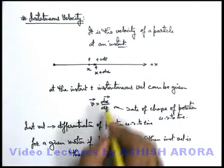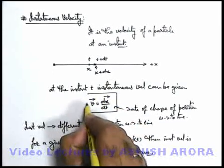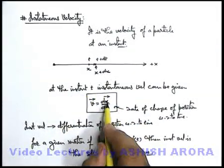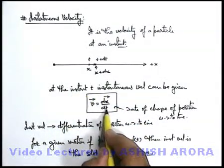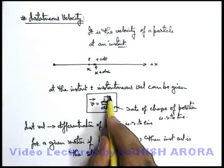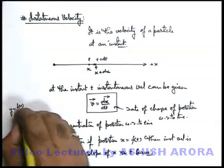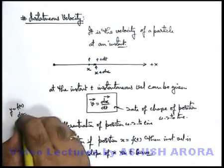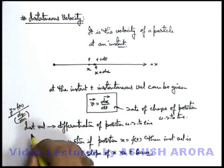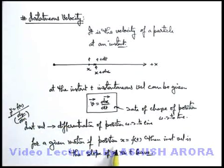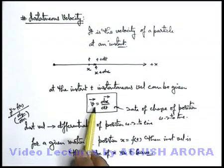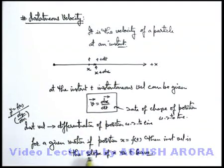As we already studied, this differentiation of a particular variable with respect to its free variable on which it depends gives us the slope. If y is given as f of x, we have studied that dy by dx is the slope of y equals f(x) curve. Similarly here we can write if we are having position as a function of time, then instantaneous velocity is given by the slope of x versus time curve.